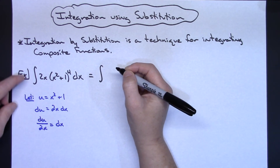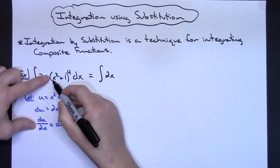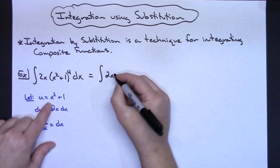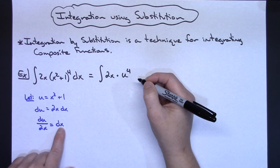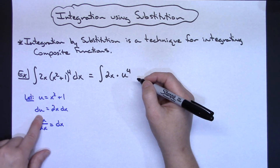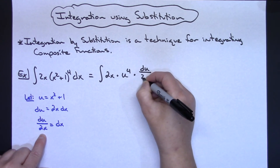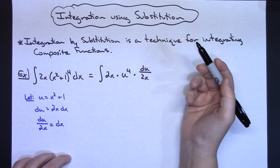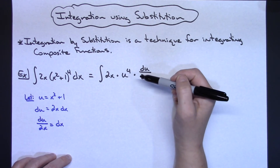So I've got my integral. My 2x I have to leave because I don't have anything I can substitute for that. The x squared plus 1 — well I said I was going to let u equal x squared plus 1, so I'm going to replace that with u to the 4th. Now my dx — since I solved for dx — I know what dx is and I can substitute du over 2x in for my dx. Now at this point it looks a little tacky — you've got x's and u's — so I want to see if I can cross things out. My ultimate goal would be to cross out all my x's.